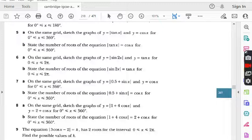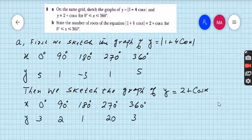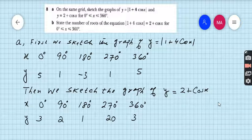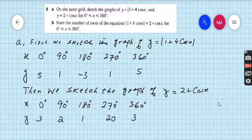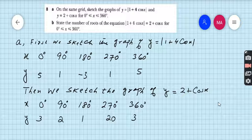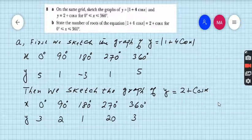So let's start question number 8. You can see on the screen question number 8 part a: on the same grid sketch the graphs of y equals 1 plus 4 cos x absolute valued function and y equals 2 plus cos x for the domain 0 to 360 degrees. Very easy.